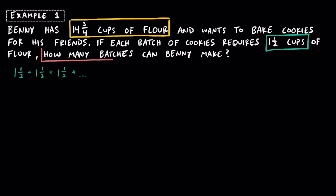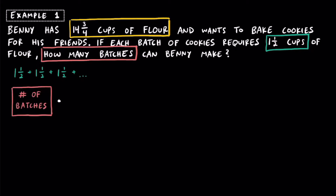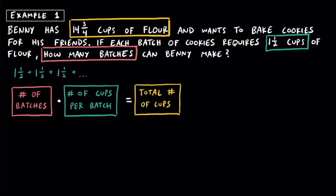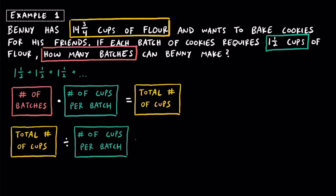Since the question is asking us how many batches Benny can make before he runs out of flour, let's set up an equation. If Benny takes the number of batches of cookies and multiplies that by the number of cups per batch, this should equal the total number of cups of flour he has. Rearranging this, the total number of cups of flour divided by the number of cups per batch equals the number of batches Benny can make.